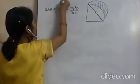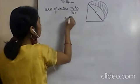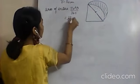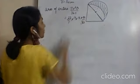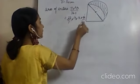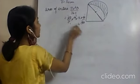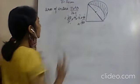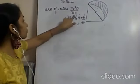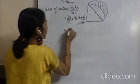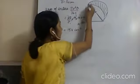With r equals 14 cm and θ equals 90 degrees: area of sector equals 22/7 into 14 into 14 into 90/360. Simplifying: 90/360 gives 1/4, and 7 cancels with 14 twice. We get 11 into 14 equals 154 cm².